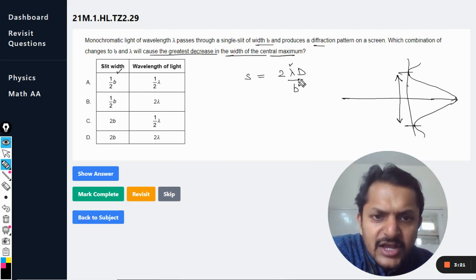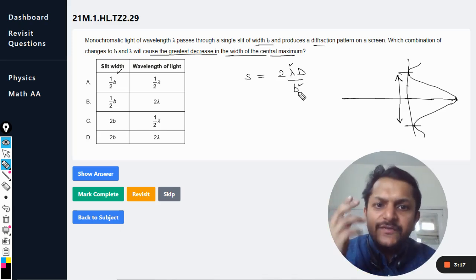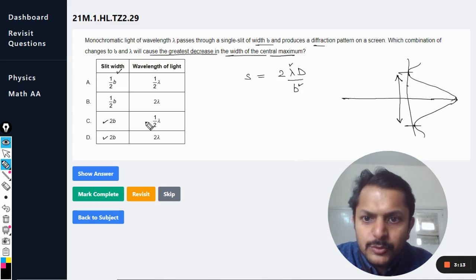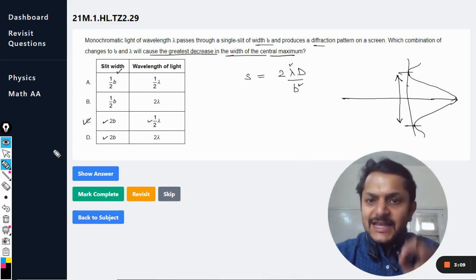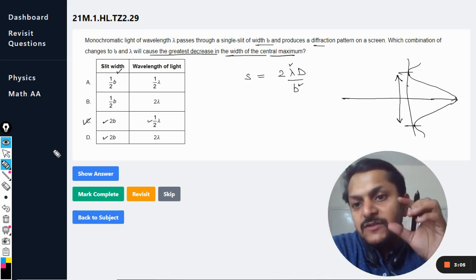decreased and the width should be increased. The wavelength should be decreased, and hence the answer should be C, because in C the wavelength is halved and the width of the slit is doubled.